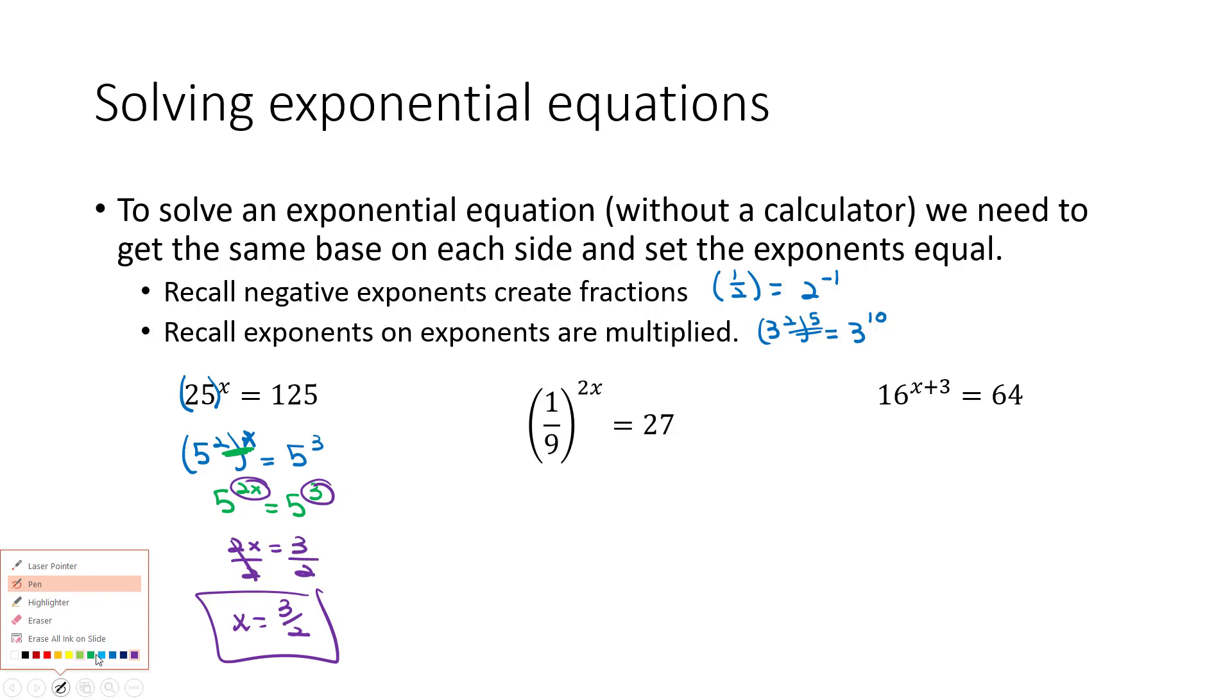Similarly on the second example, 1/9 to the 2x equals 27. 9 can be rewritten as 3 squared. And to get the fraction, it has to be a negative exponent with 2x on top of it. And 27 can be rewritten as 3 to the third power. Same idea. We can multiply those exponents together. Negative 2 times 2x is negative 4x equals 3 to the third power. And again, we've got the same base, so the exponents must be equal. Negative 4x equals 3. Divide by negative 4 and we have x is equal to negative 3/4.